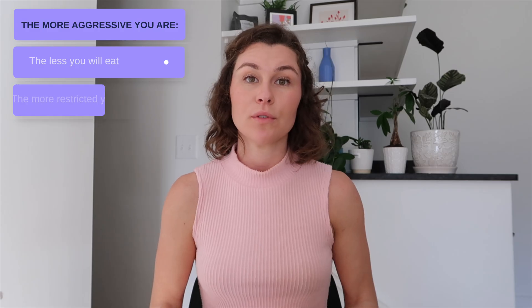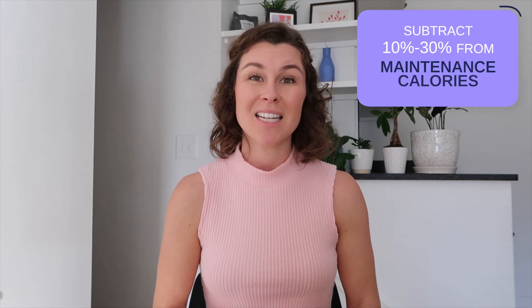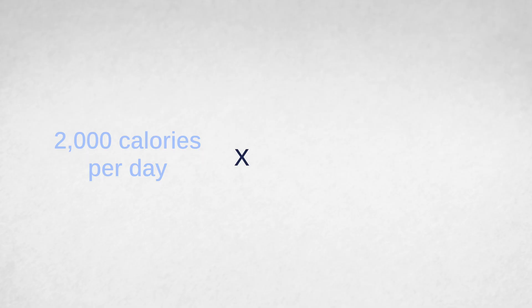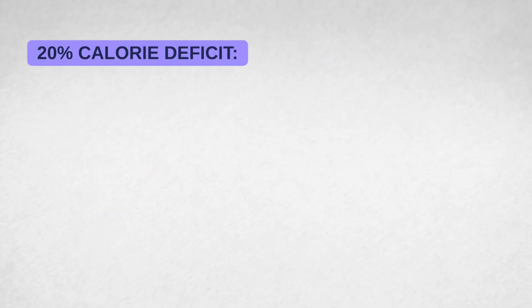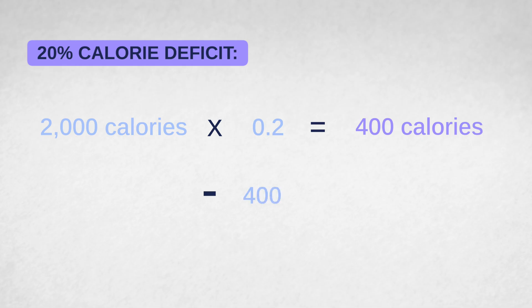Next, we're going to calculate your fat loss calories. The more aggressive you are with your calorie deficit, the less you eat, the more restricted you'll feel, and the higher the likelihood of losing muscle mass. You can also lose weight more slowly by being less aggressive, but you may get discouraged. We want the sweet spot. Typically, you subtract 10 to 30 percent from your maintenance calories. For a 20% deficit on 2,000 calories: 2,000 × 0.2 = 400 calories, and 2,000 − 400 = 1,600 calories per day. These are your fat loss calories.